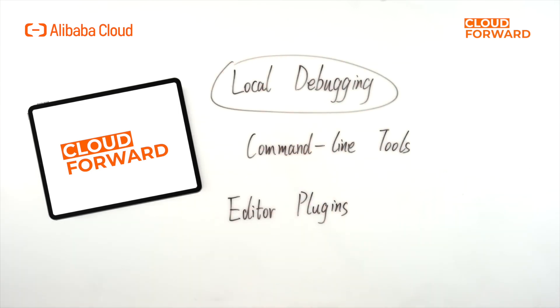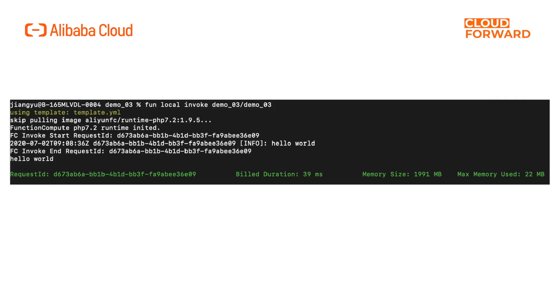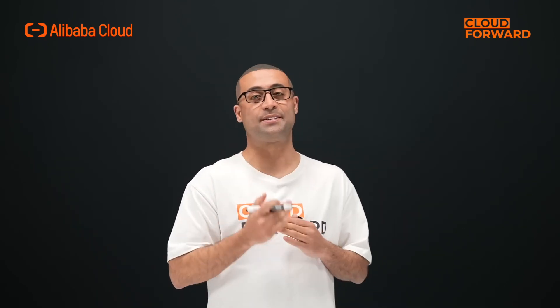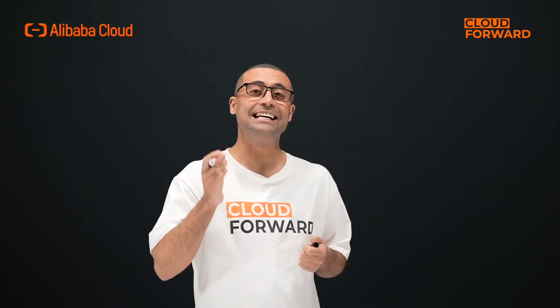In addition, we can also perform local debugging including debugging through command line tools and editor plugins. Most serverless platforms provide users with relatively complete command line tools such as Alibaba Cloud's FunCraft, and there are also open source projects such as Serverless Devs that support serverless platforms from multiple cloud vendors. Taking Serverless Devs as an example, the method of locally debugging Alibaba Cloud Function Compute is to first ensure that there is a function compute project locally, and then execute the debugging command in the project, such as debugging in Docker.